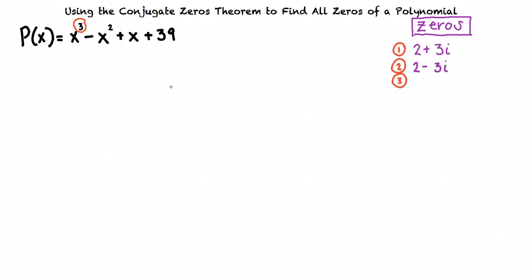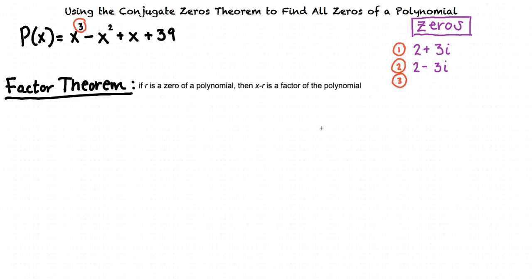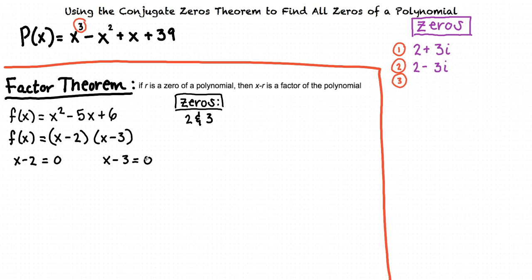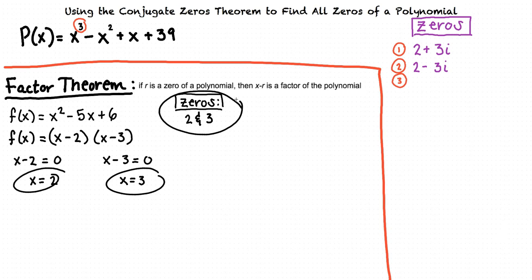To find the last zero, we are going to use the factor theorem, which states that if r is a zero of a polynomial, then x minus r is a factor of that polynomial. For example, consider f of x equals x squared minus 5x plus 6, which has zeros of 2 and 3. We could factor it as f of x equals x minus 2 times x minus 3, set each factor equal to zero, and solve for x. This theorem reminds us we can go the other direction — starting with a zero and turning it into a factor. Given zeros of 2 and 3, two factors are x minus 2 and x minus 3.